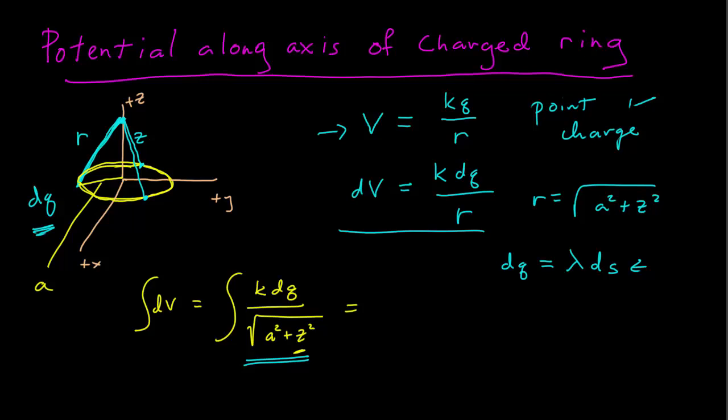But since A and Z aren't functions of theta, we can pull them out of the integral, square root of A squared plus Z squared, and we just get dQ.